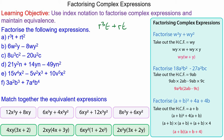We begin with r cubed t plus rt squared. The common factor is rt. Multiply rt by r squared to make r cubed t, and multiply rt by t to make rt squared. So we put the highest common factor on the outside of the brackets and we are left with r squared plus t.